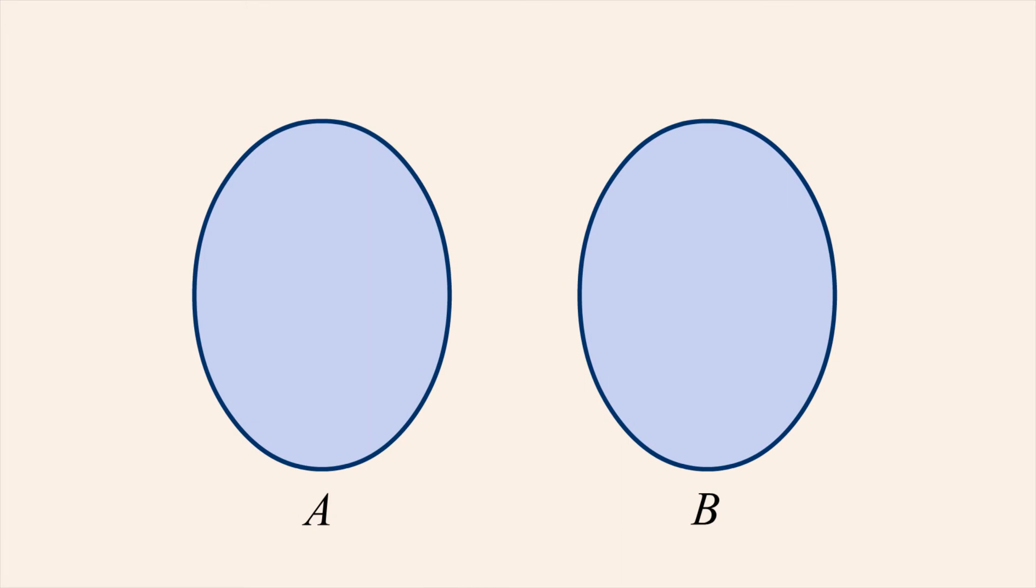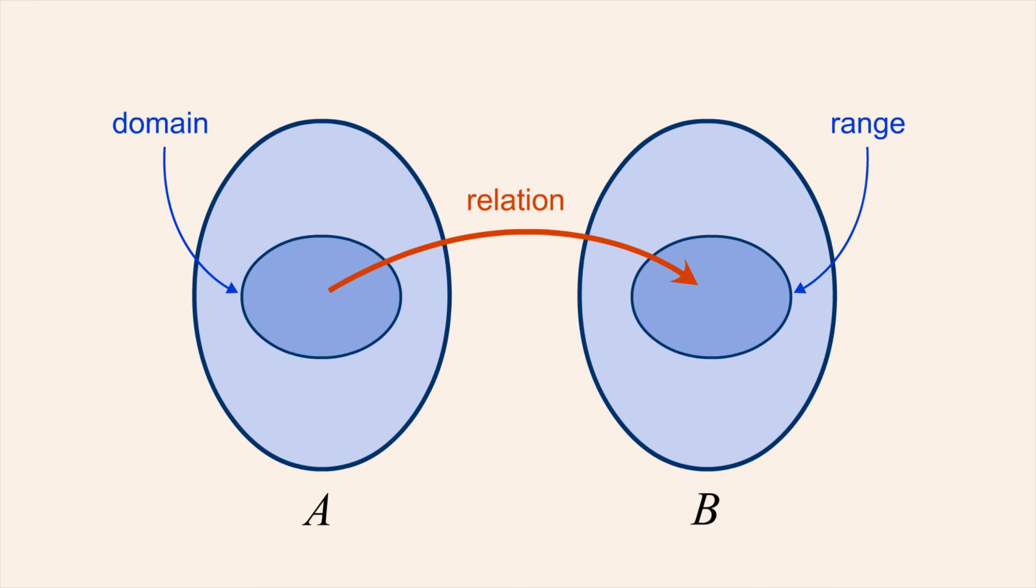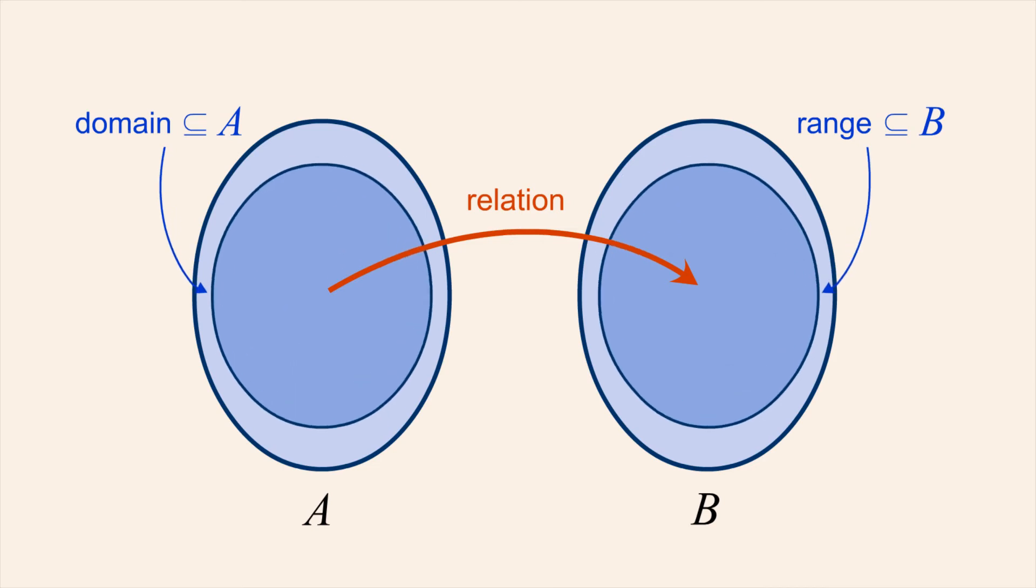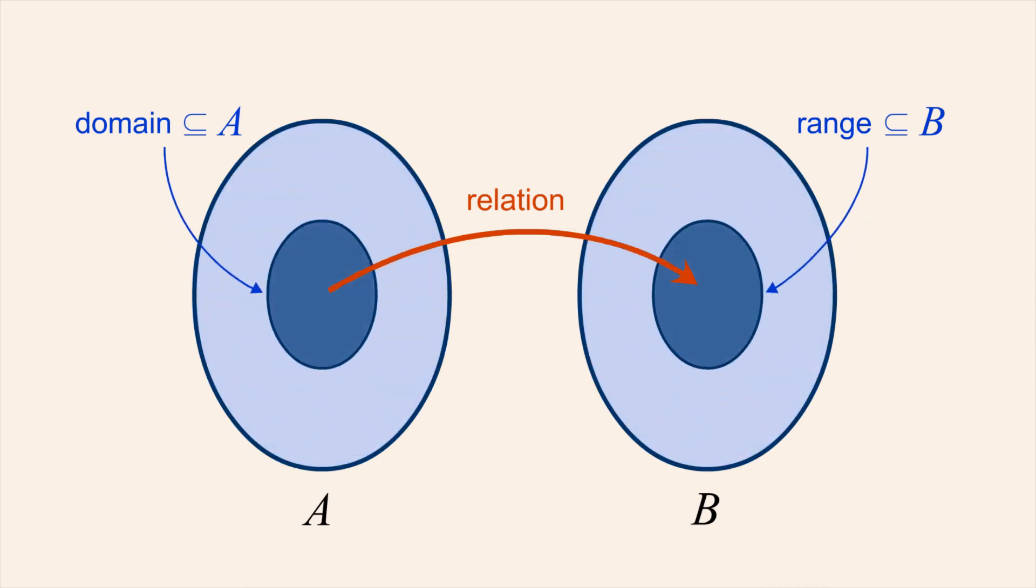So in a binary relation from A to B all the elements of A which are related form the domain and all the elements of B which are related form the range. The domain and range are subsets of A and B. The domain and the range can include every element of A and B or could include just a single element.